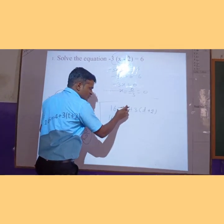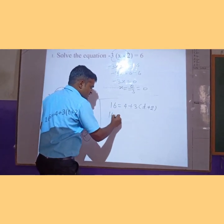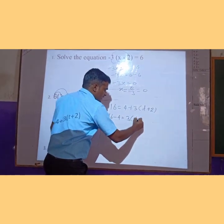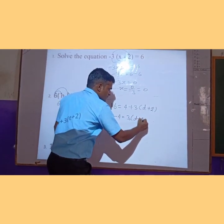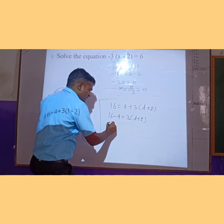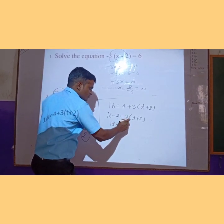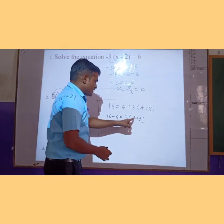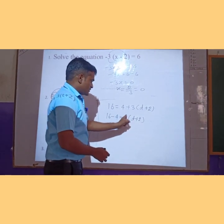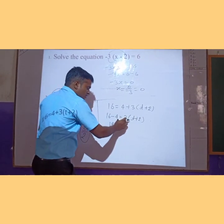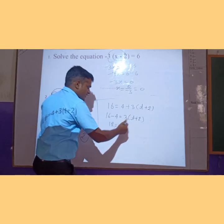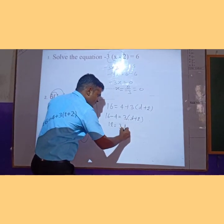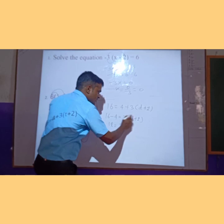We will transpose 4 from right to left. So 16 minus 4 equals 3 into t plus 2. Now 16 minus 4 is 12, equal to 3 multiplied by the bracket t plus 2. We distribute 3 to both terms inside the bracket, giving 3t plus 3 multiplied by 2, which is 3t plus 6.